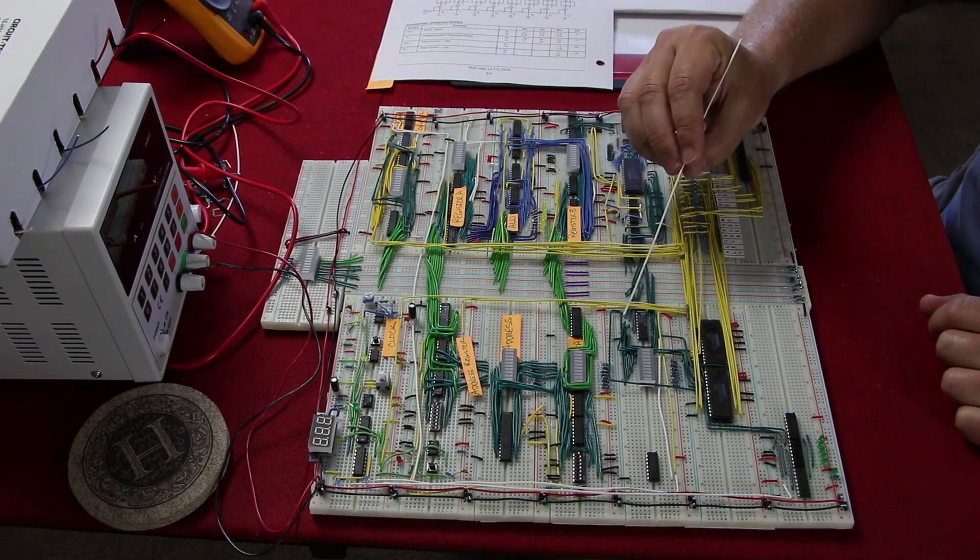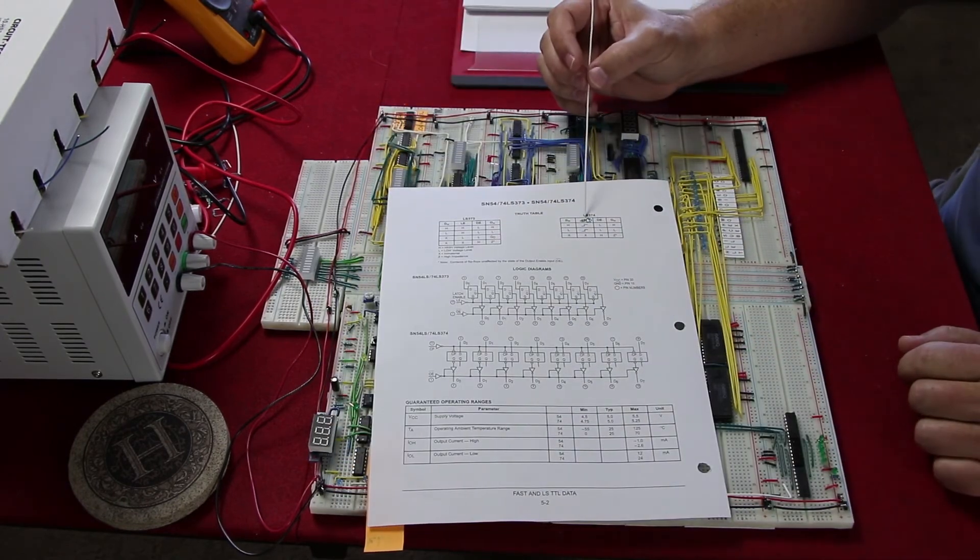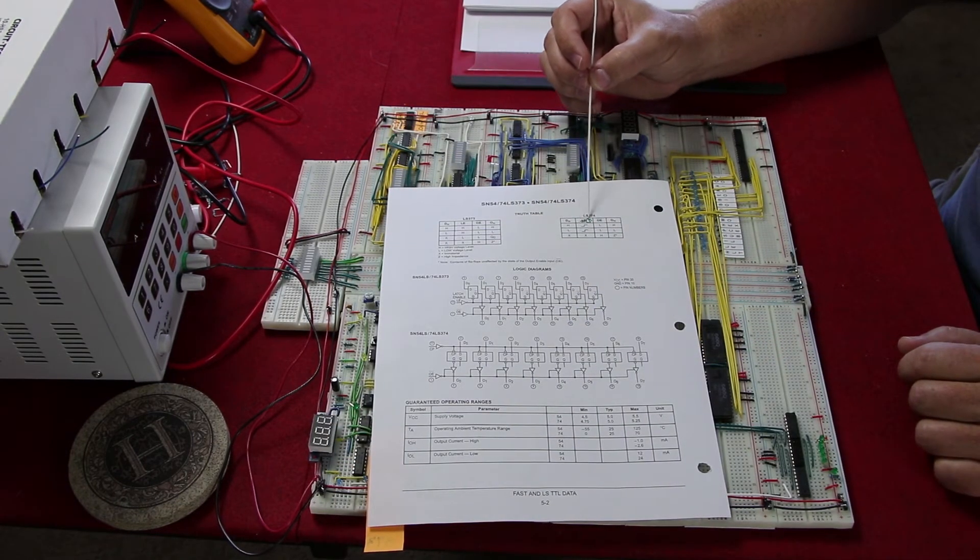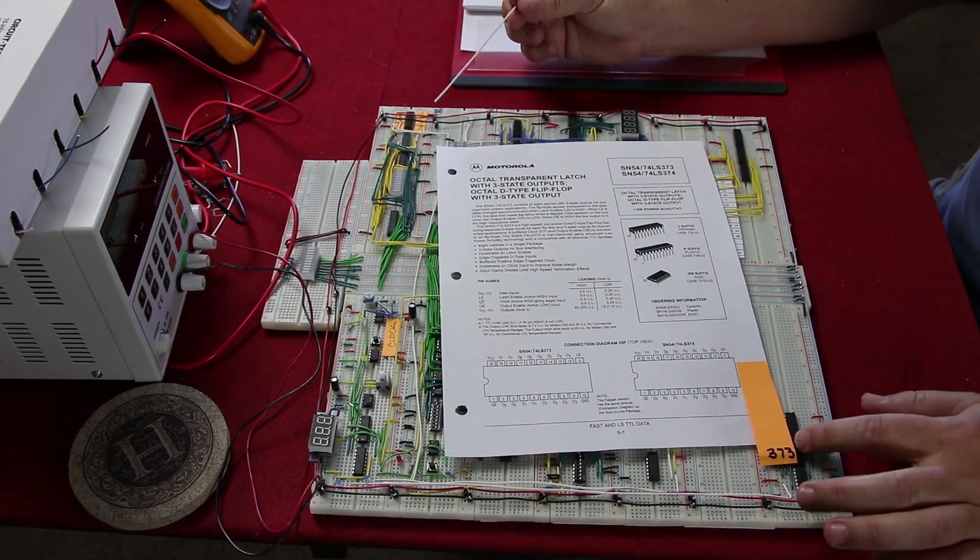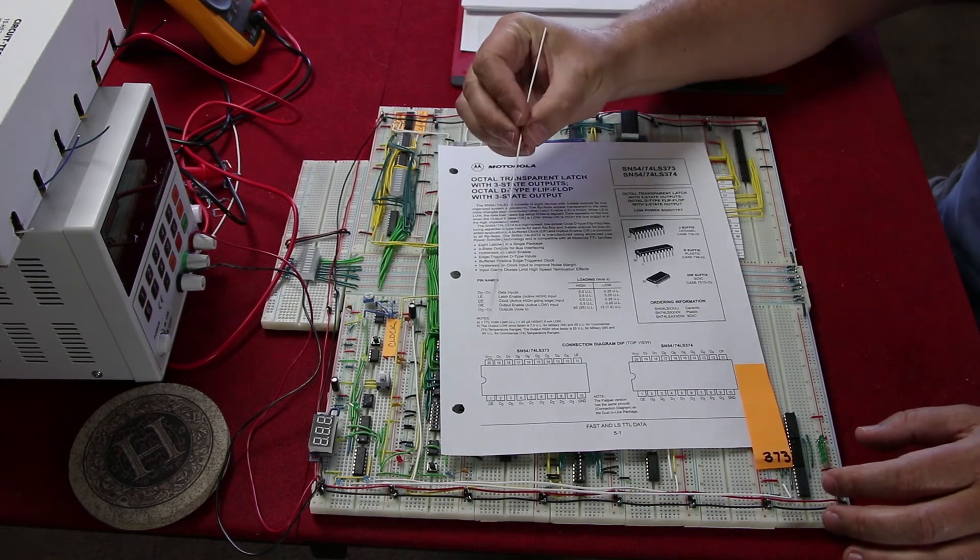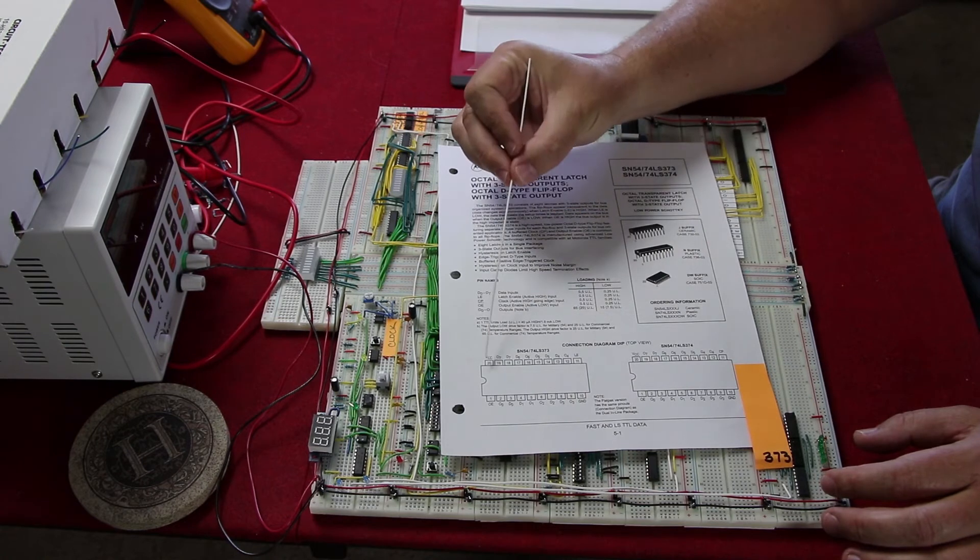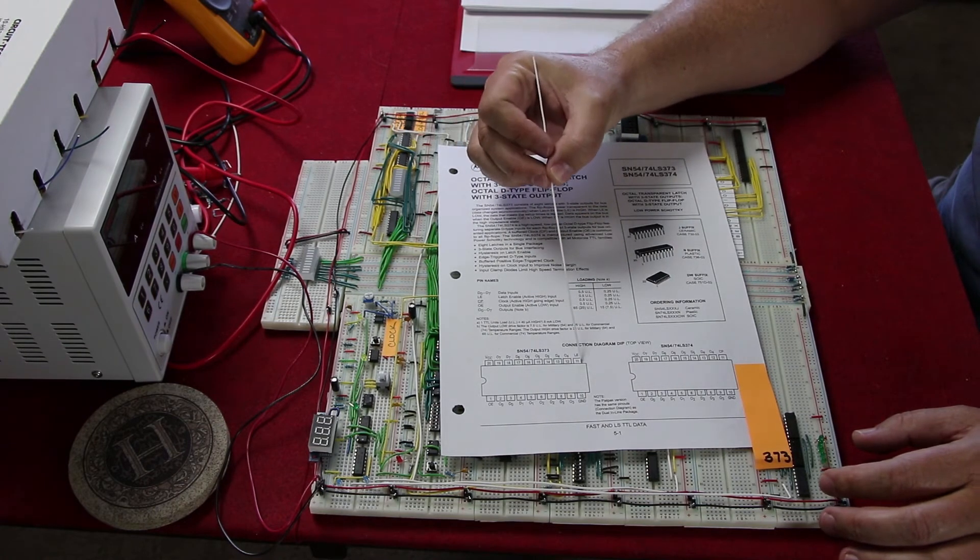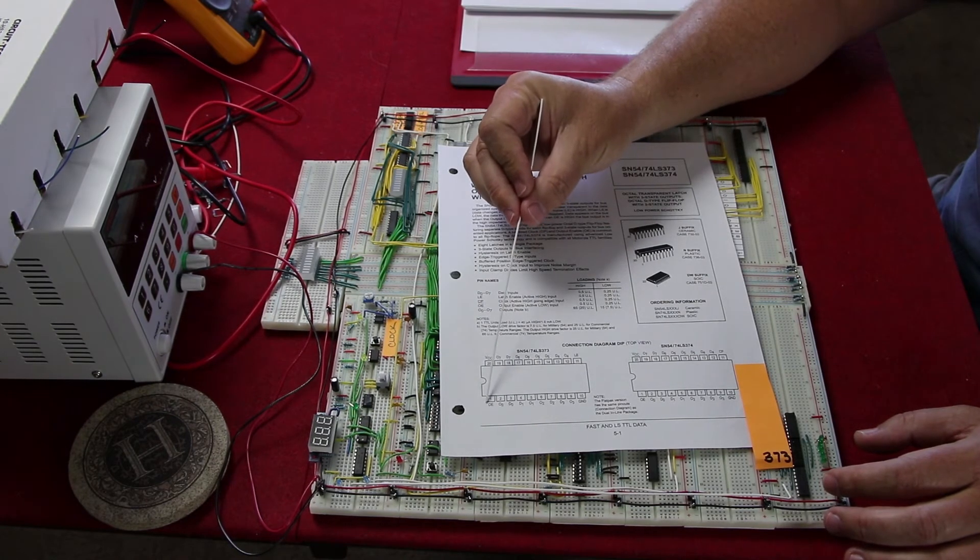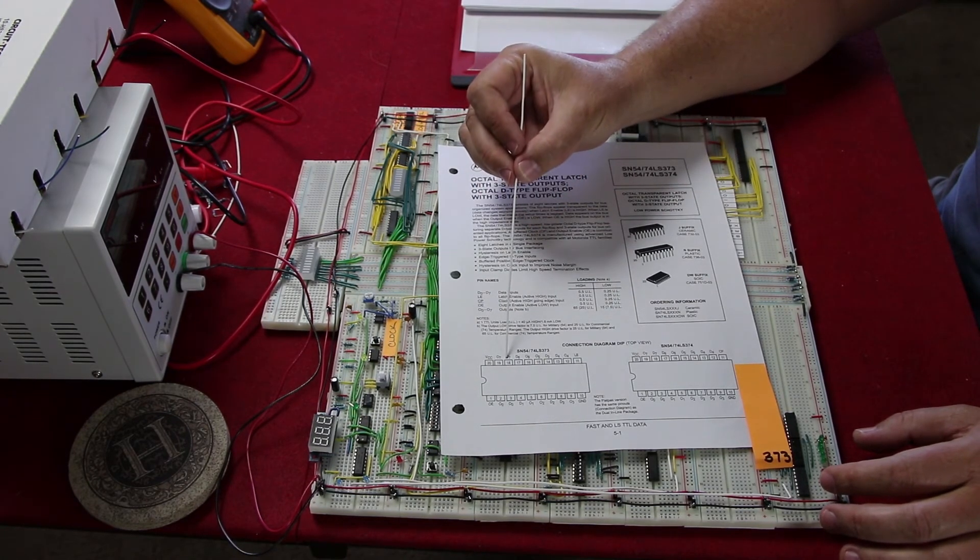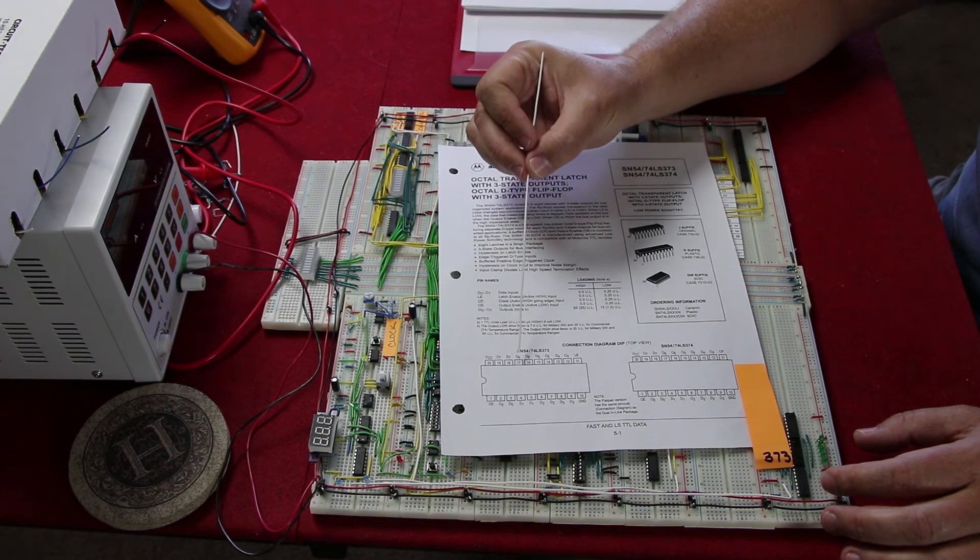That's the 373 and why I used it. The datasheet here, you'll notice that the 374 has an error on it right here. This is not latch enable, it's actually clock pulse. Here's the 373. Essentially what the 373 and 374 do is you have your typical pinouts, ground and VCC voltage, your latch enable and your output enable. Output enable here is triggered low, there should be an overline over this. You have your D0 through D7, so eight bits that you can bring data in.